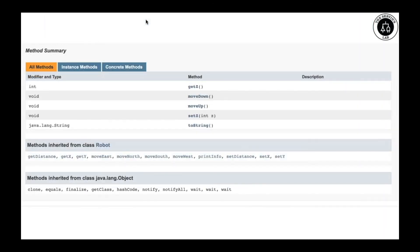When we see the methods, it will not only generate the getZ and setZ, but notice how we inherit also some attributes from robot. Notice that here we describe that there is a couple of items here that we inherit from the class robot. This includes getDistance, getX, getY, moveEast, moveNorth, South, West, printInfo, setDistance, setX, and setY. These are inherited from the class robot.